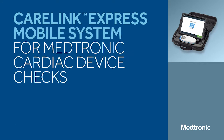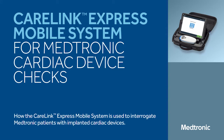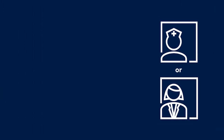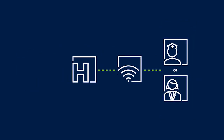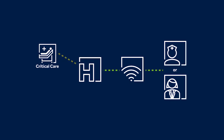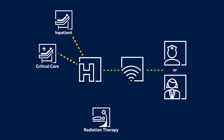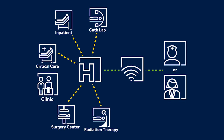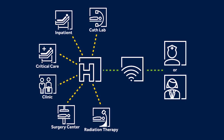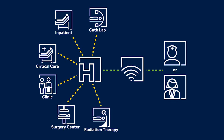In this video, we'll demonstrate how CareLink Express Mobile is used to interrogate patients with Medtronic implanted cardiac and monitoring devices. CareLink Express Mobile allows clinicians to interrogate devices in a variety of healthcare settings, such as critical care, inpatient, radiation therapy, cath lab, surgery center, and the cardiology clinic. CareLink Express Mobile is also used for routine device checks and pre-discharge evaluations.